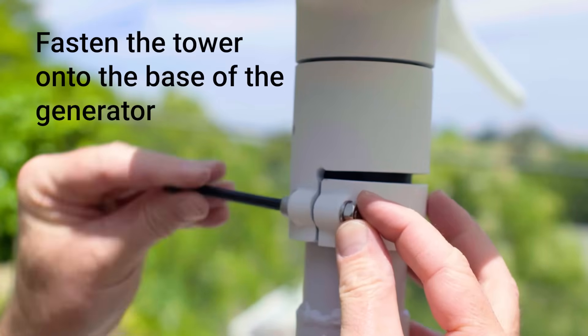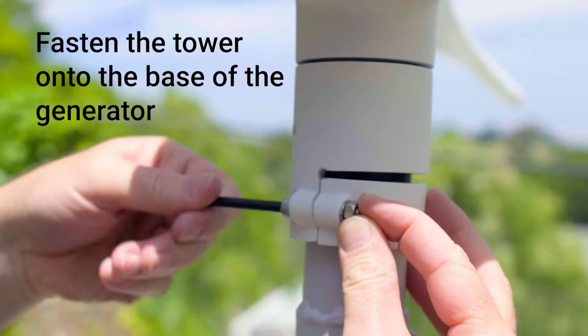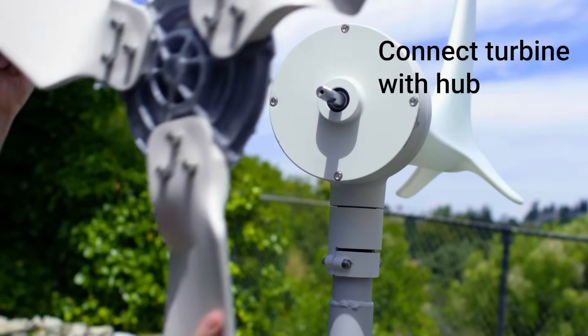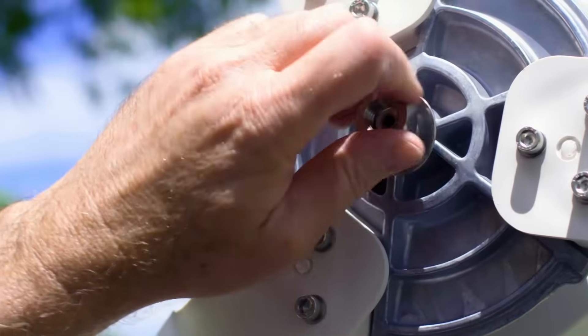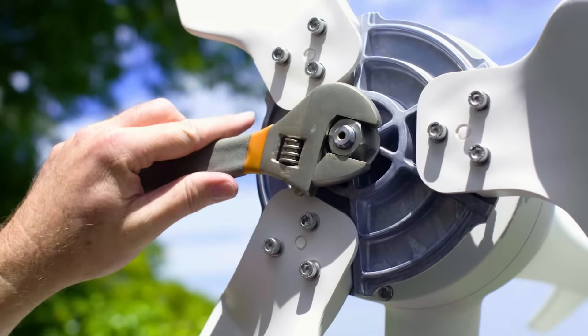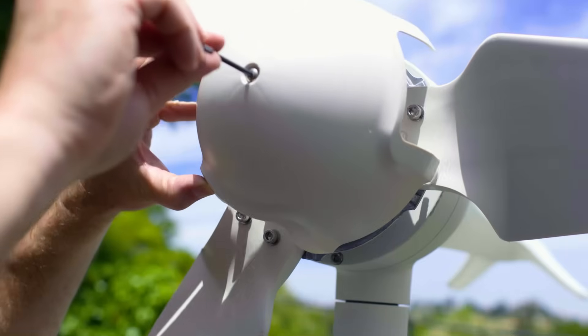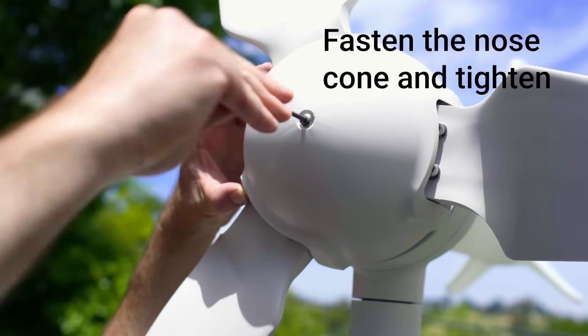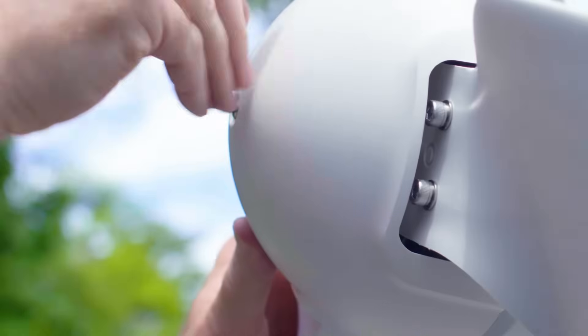Fasten the tower onto the base of the generator with the number 5 hex key. Connect turbine with hub with the inverse tooth nut and M14 washer. Fasten the nose cone and tighten with M5 XL50 screw and 3mm hex key.